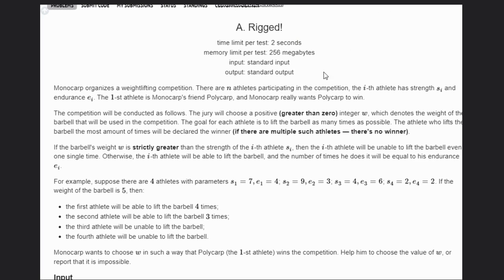Monocorp organizes a weightlifting competition. There are N athletes participating in this competition. The i-th athlete has strength Si and endurance Ti. And the first athlete is Monocorp's friend, Polycarp.